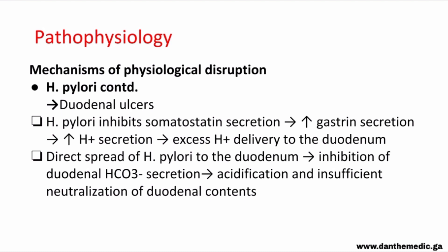In the case of duodenal ulcers, H. pylori inhibits somatostatin secretion, thereby increasing secretion of gastrin, which increases the amount of hydrogen ions secreted, resulting in excess delivery of hydrogen ions into the duodenum. Direct spread of H. pylori in the duodenum also causes inhibition of duodenal bicarbonate secretion, leading to acidification and insufficient neutralization of duodenal contents.